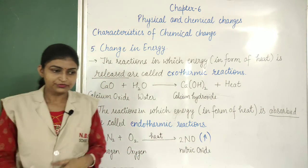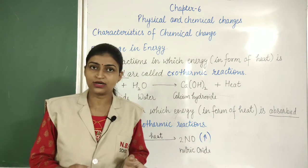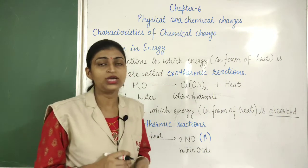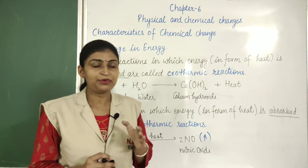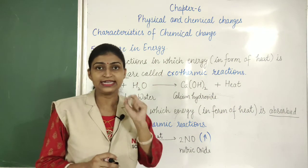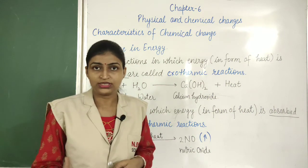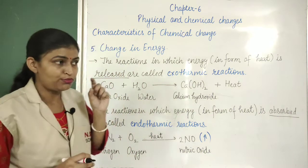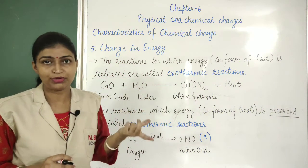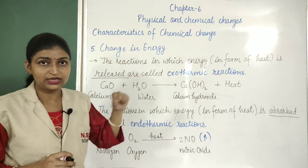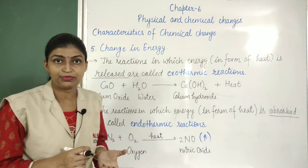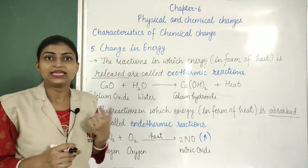In some chemical reactions, sound or light can be produced. For example, in the previous activity, when the magnesium ribbon was being burnt, it burned with a dazzling white light. We can also identify reactants based on the colour of the light produced, the colour of the gas released, the colour of the precipitate formed, and the smell observed.